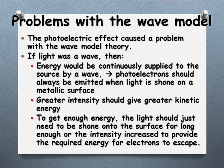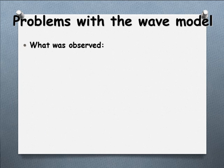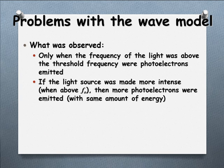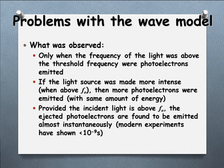You need to know how the photoelectric effect causes a problem with the wave model and how it supports a particle model. What we actually observed was: only when the threshold frequency was exceeded were photoelectrons emitted. If the light source was more intense, you got more photoelectrons but with the same amount of energy. And provided the incident light was above the threshold frequency, they were emitted effectively instantaneously — on the order of 10⁻⁹ seconds — so it wasn't a case of energy building up over time.